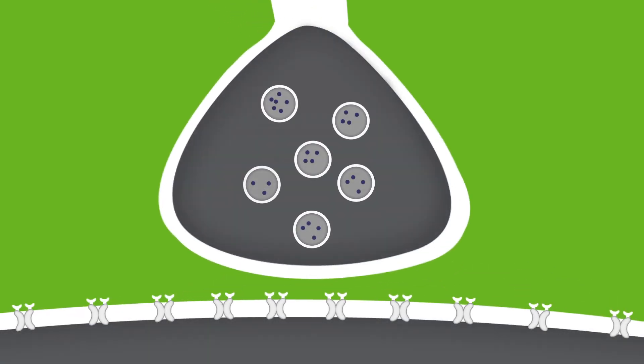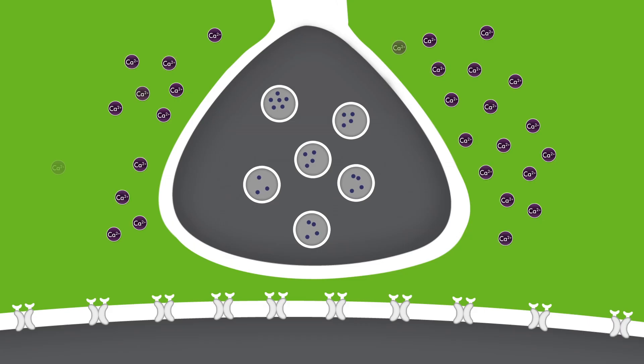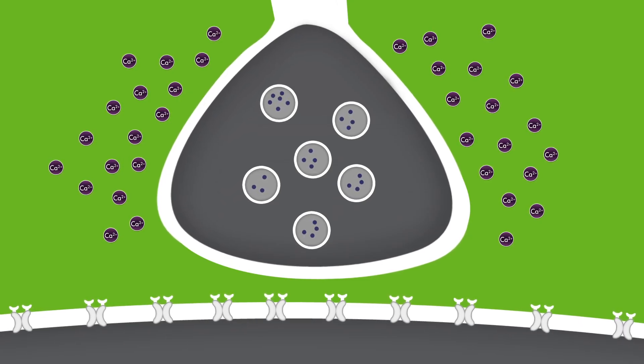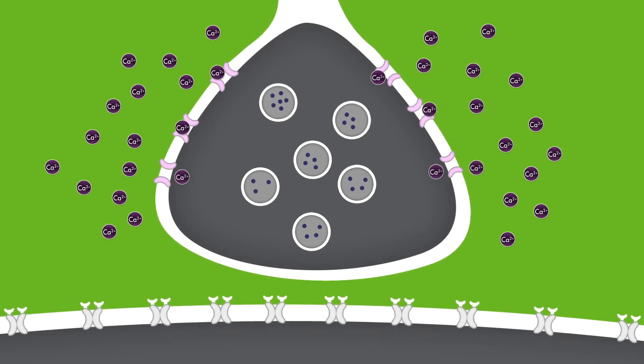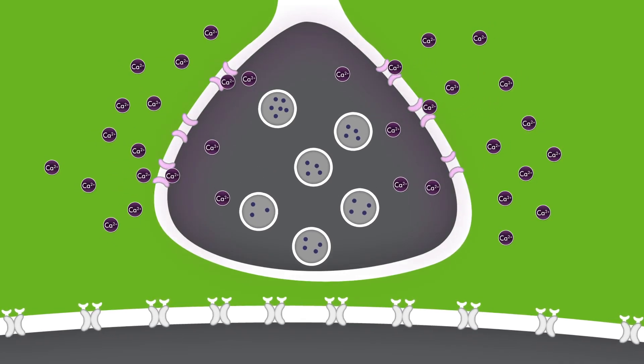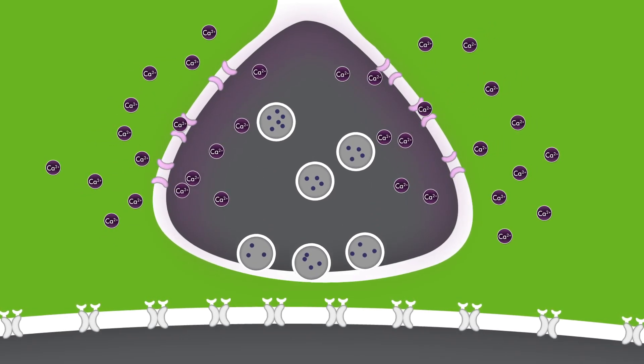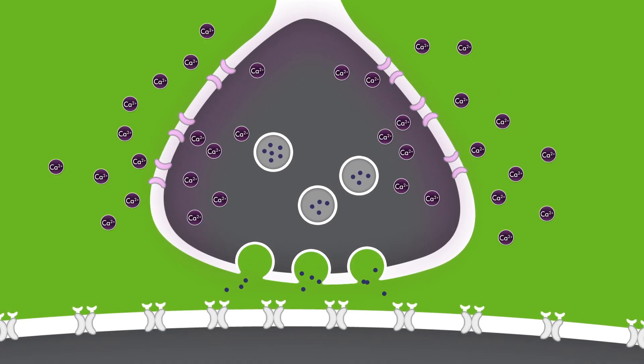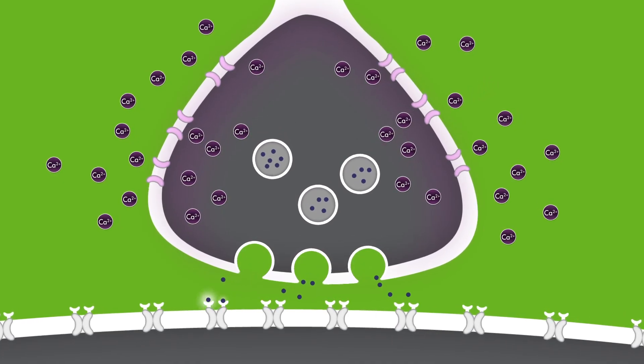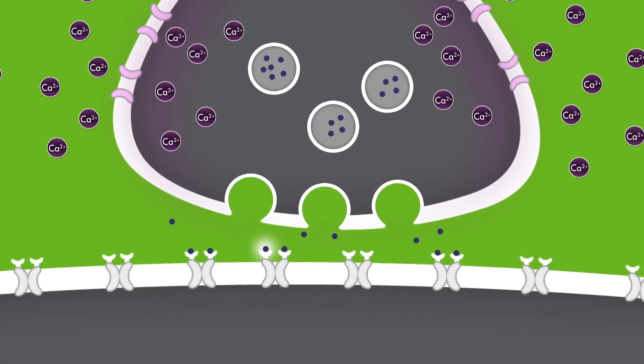Once the action potential reaches the terminal buttons, this change in membrane polarity causes calcium channels, normally held closed, to open and allow calcium into the cell. Calcium then acts as a signal to release the neurotransmitter substance, which is docked at the presynaptic membrane via exocytosis. The neurotransmitter then binds to the postsynaptic receptor, and then the cycle begins again.